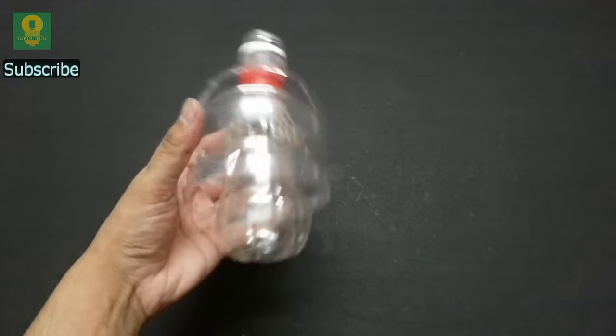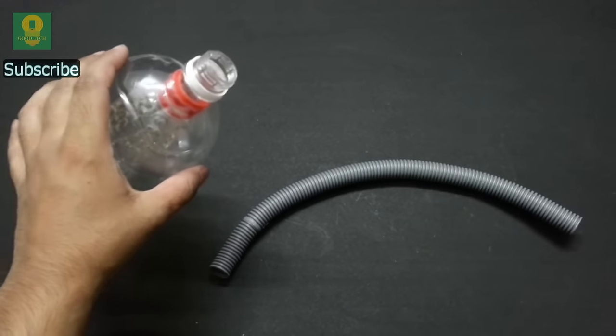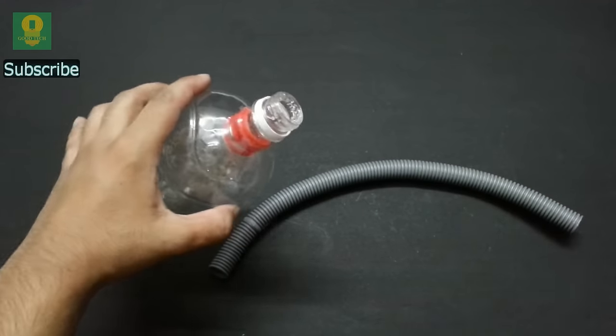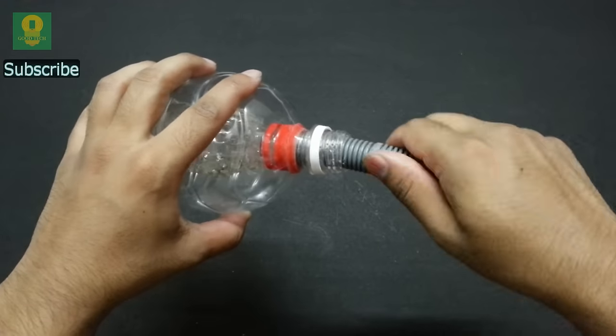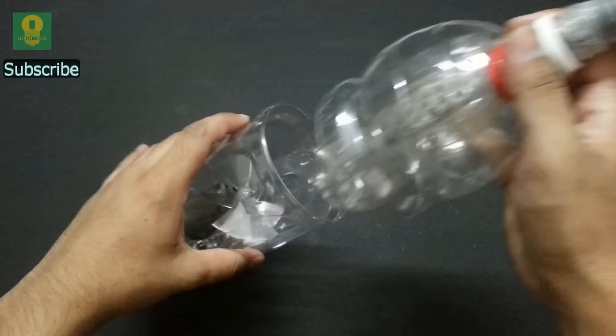Now, take the dust container and a plastic conduit. Using hot glue, attach the conduit at the mouth of the dust container. Fix both the pieces together.